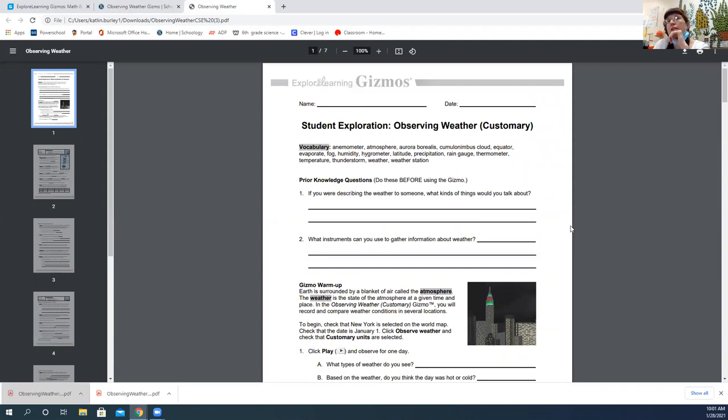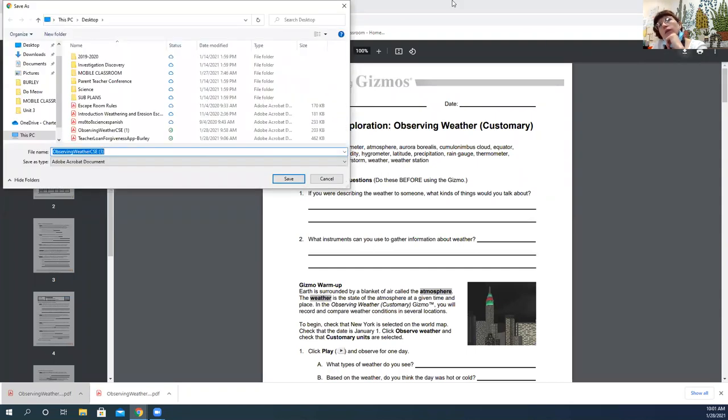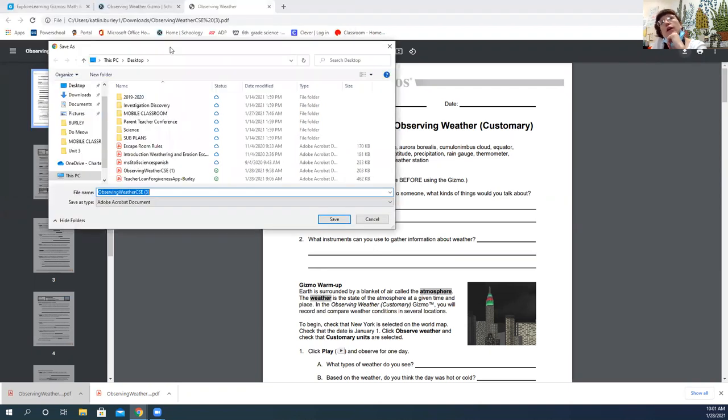In order to be able to edit this, I need to save it on my desktop. So I'm going to hit the download button. I'm going to ensure that it says desktop. That means it's going to be right as soon as I open my computer. I can rename it, observing weather gizmo, whatever I need to. If I have a folder that says science, I can put it in that folder as long as it's somewhere I can find it.